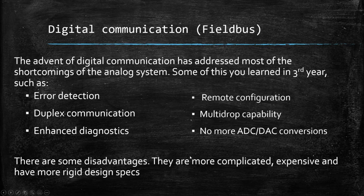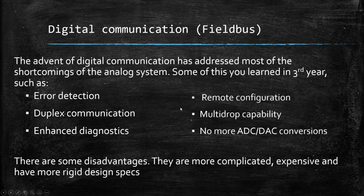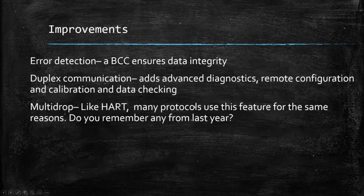Some disadvantages of digital: they are more complicated, more expensive, and have more rigid design specs. It doesn't really affect us as instrument guys because complicated doesn't scare us, expensive is somebody else's problem, and design specs are an engineer's problem. But that's the basic difference between analog and digital.